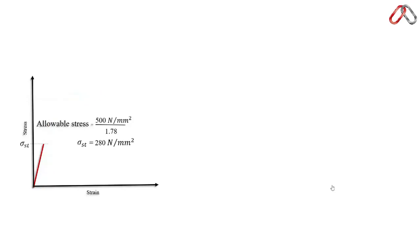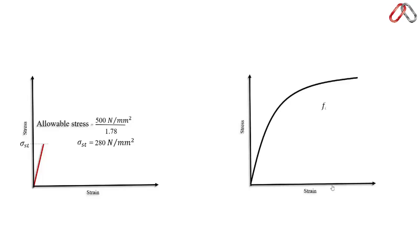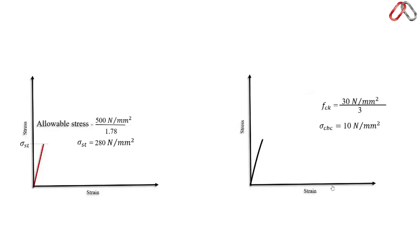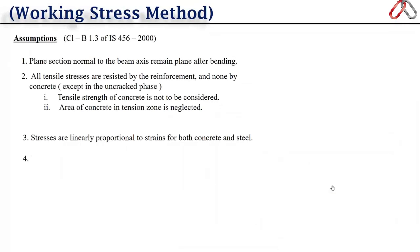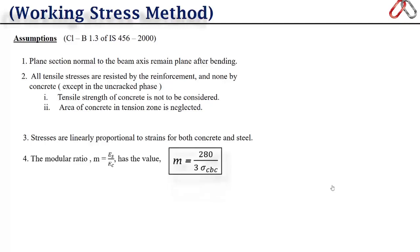So the graph value reduces up to σ_st, where stresses are directly proportional to strain. Similarly, for M30 grade concrete the characteristic strength is 30 N/mm². Dividing by the factor of safety 3 gives permissible stress σ_cbc = 10 N/mm², making the relationship linear. The fourth assumption is that the modular ratio m = 280 / (3σ_cbc), where σ_cbc is the permissible compressive stress of concrete in bending.